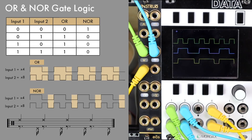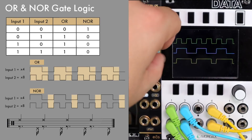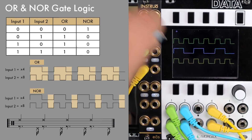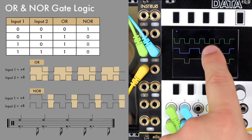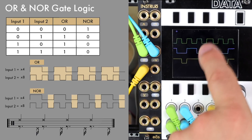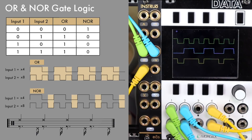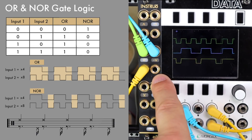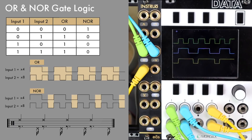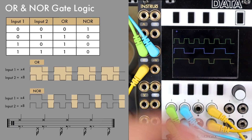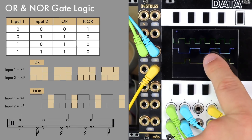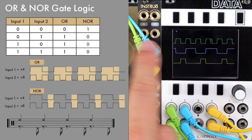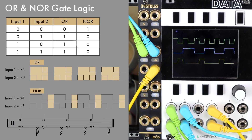OR logic is high whenever anything is high, so a single input will pass through. Because these overlapping gates create a sustain, everywhere but that little gap where neither input is on gives an output. NOR will give me the opposite output — an output when nothing is high, nothing is on at the two inputs. You can see there's only that tiny space where neither of these clocks is active that gives me an output.